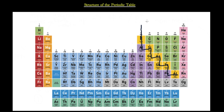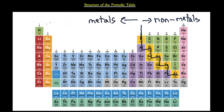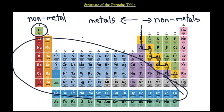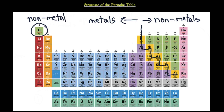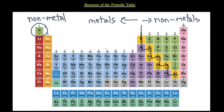The right side of the staircase is going to be non-metals, and all of the elements on the left side of the staircase will be metals, excluding hydrogen. Hydrogen is a non-metal. So everything on the left side around here is a metal, and everything on the right side is a non-metal.